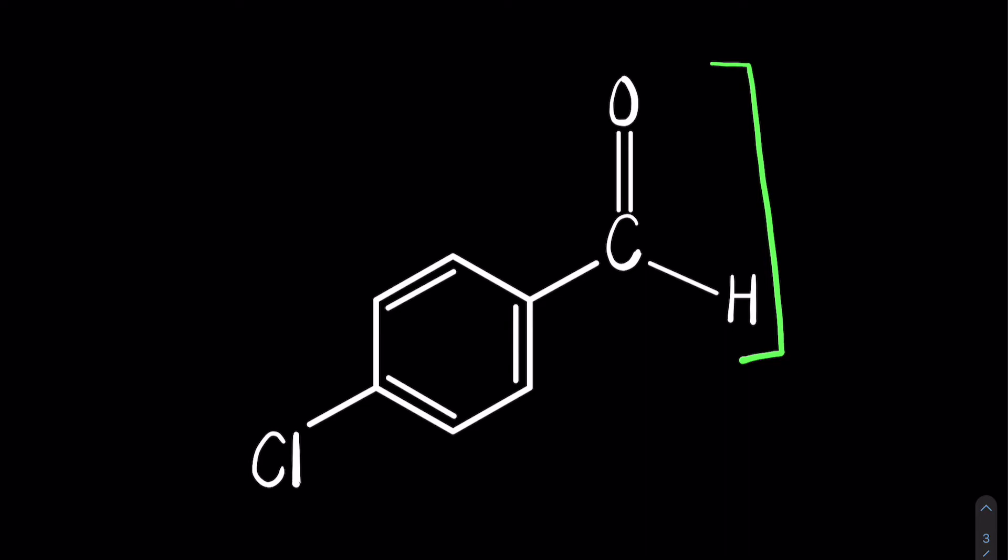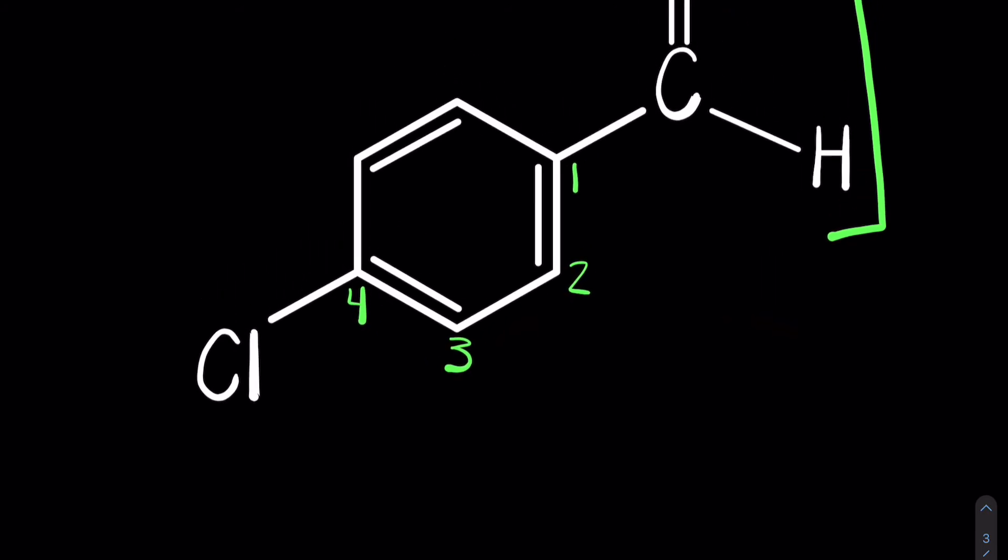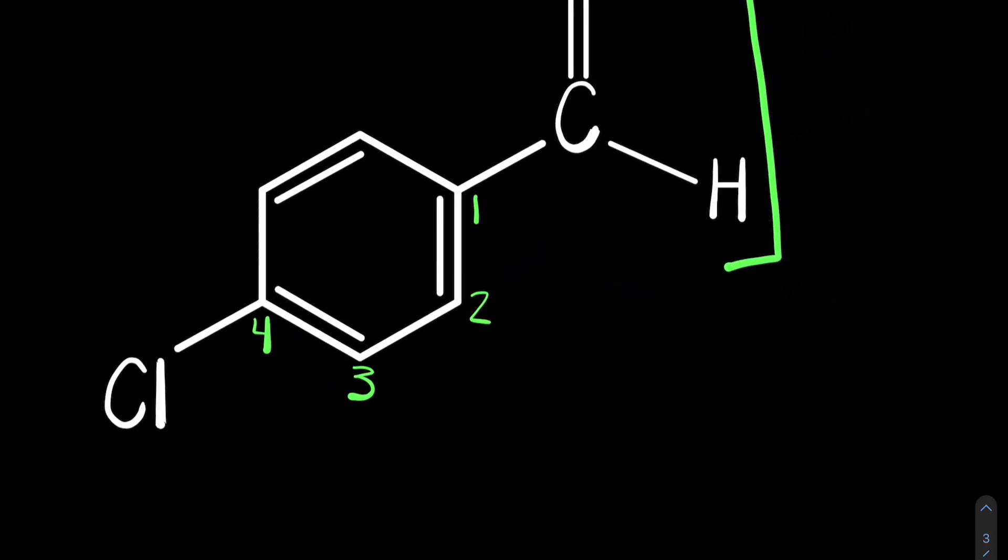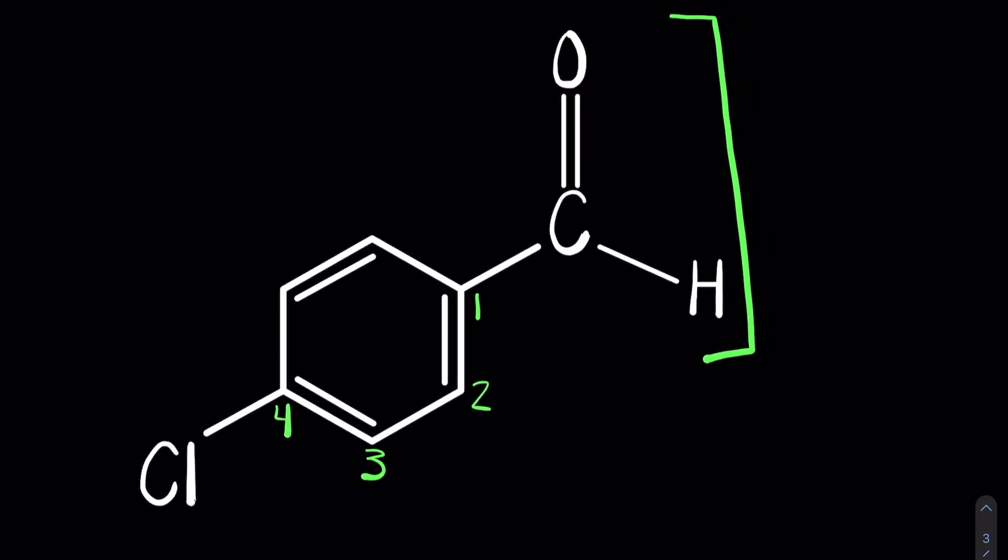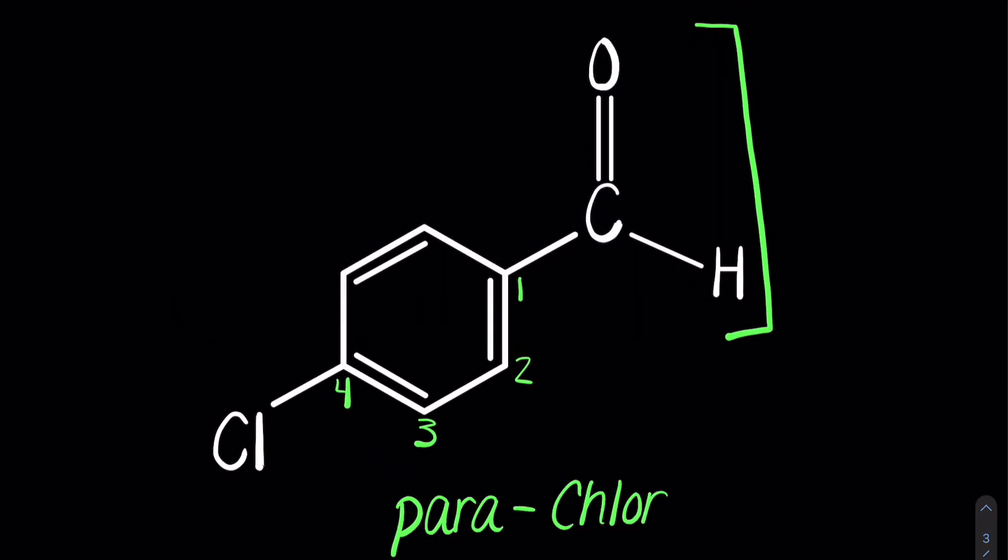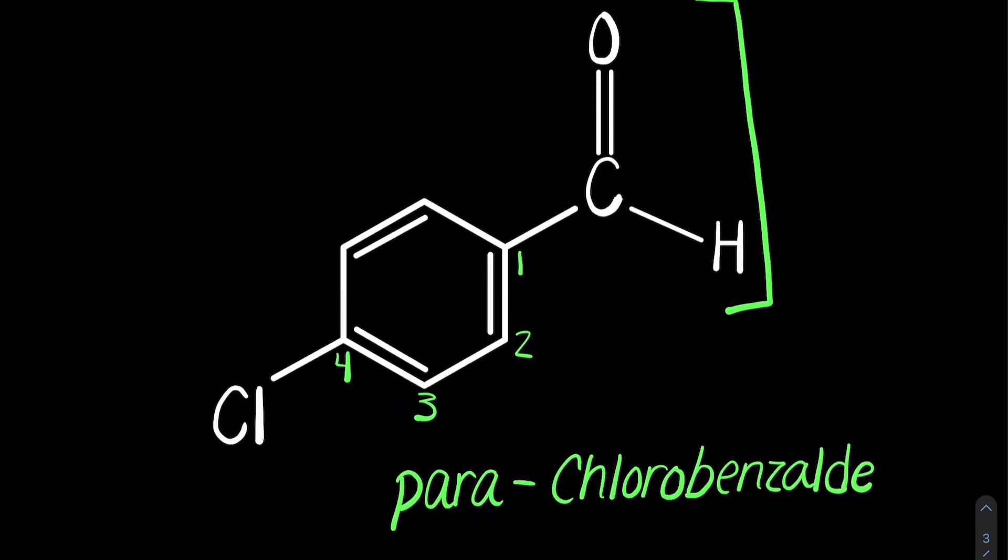All right, so let's take a look at this example. Identify the substituents, number the chain. So this is another systematic name here. We have a benzaldehyde, and we have a chlorine in the para position, meaning 1, 4. So when you can signify para, meta, ortho, the numbers are pretty irrelevant. When classifying something as ortho, meta, or para, the numbers out front are useless because those suffixes denote the positions of the atoms in the molecule. All right, so we have a parachlorine to the benzaldehyde: parachlorobenzaldehyde.